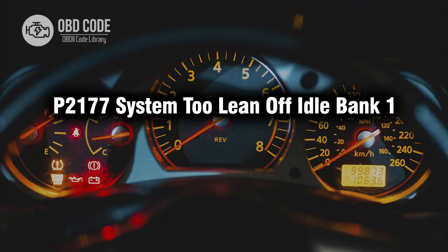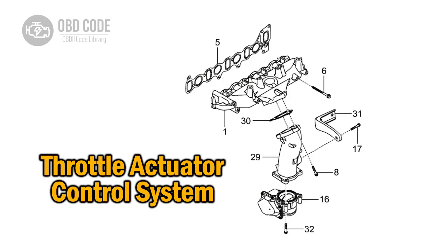Welcome. In this video we will talk about code P2177, its symptoms, causes and possible solutions. The P2177 trouble code indicates that the fuel-to-air ratio is too lean in bank one of the engine when the vehicle is not idling.